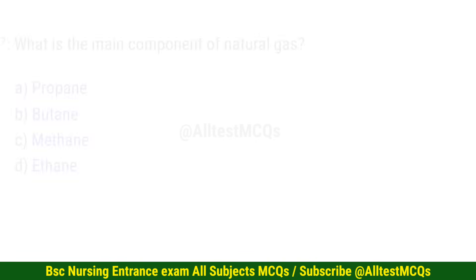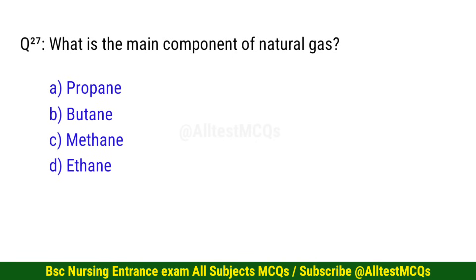Question number 27. What is the main component of natural gas? The right option is C: Methane.